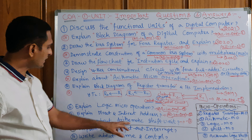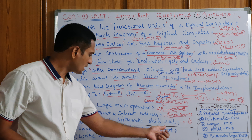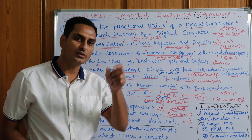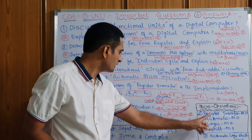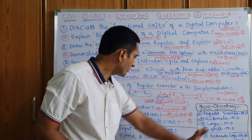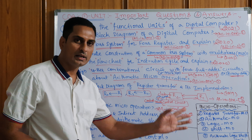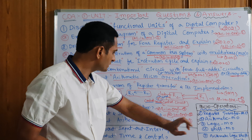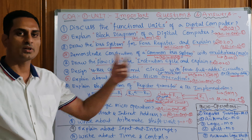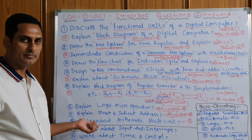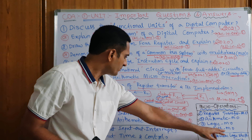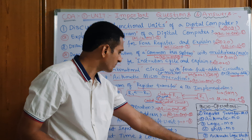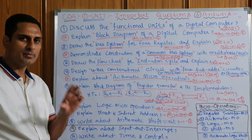Also a subtopic: write about arithmetic shift unit — this is one more last one. Micro operations are the smallest parts; operations done on those smallest parts are called micro operations. Micro operations are four types: register transfer micro operation, arithmetic micro operation, logic micro operation, and shift micro operation. Out of these four, two questions are compulsory. We got arithmetic micro operation twice, register transfer twice, and logic micro operation once. Shift micro operation may also come. The arithmetic logic and shift unit has one combined diagram with logic gates — that diagram is very simple.